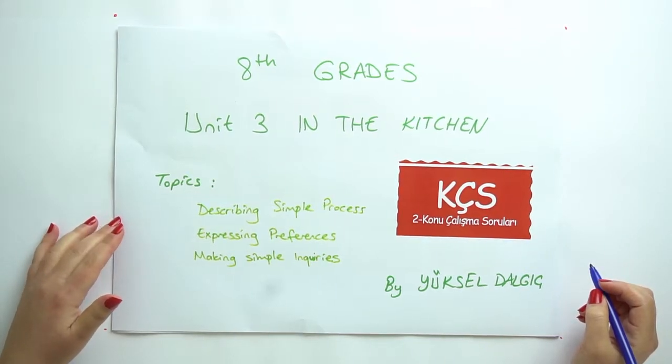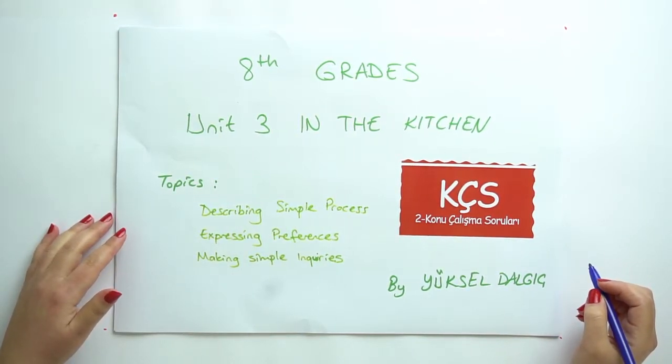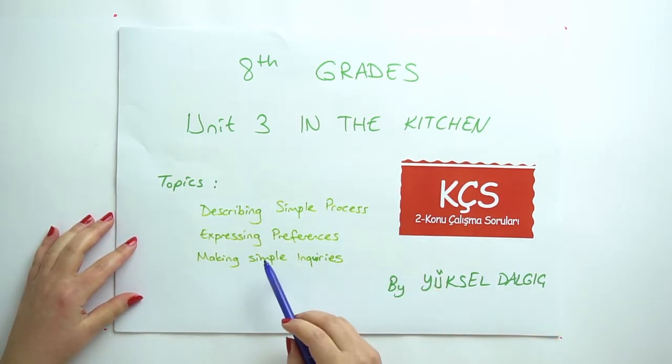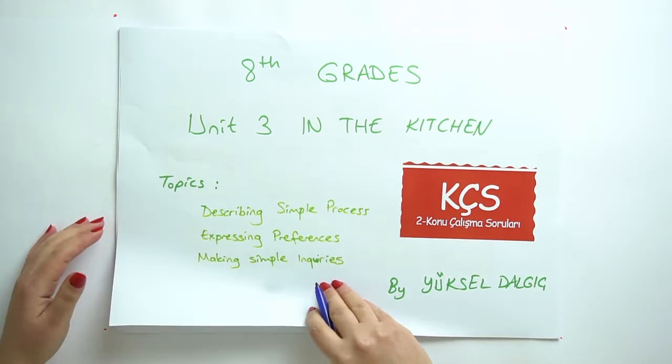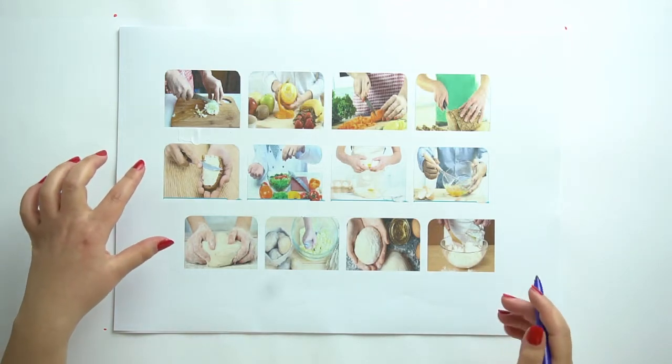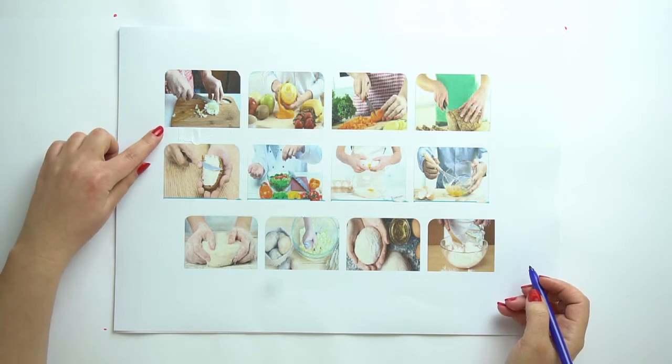Hi everyone, this is Yüksel Dalgıç. We are going to study Unit 3: In the Kitchen. Our topics are describing simple processes, expressing preferences, and making simple inquiries.